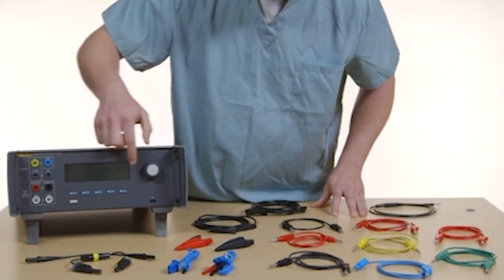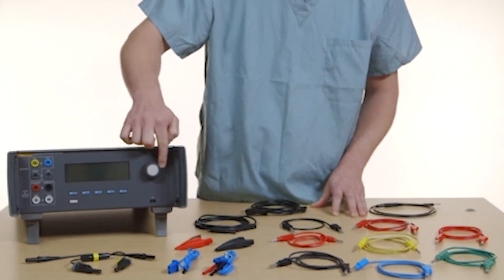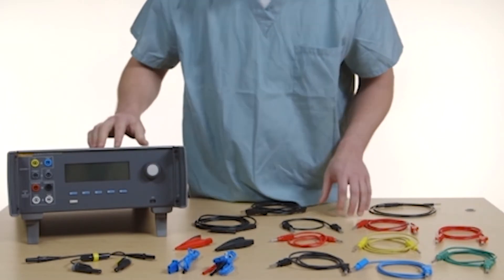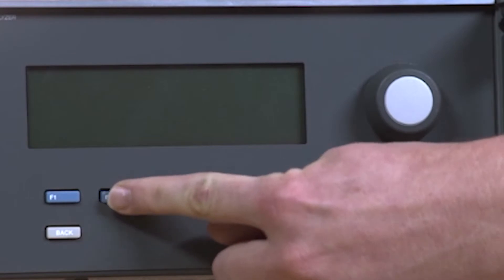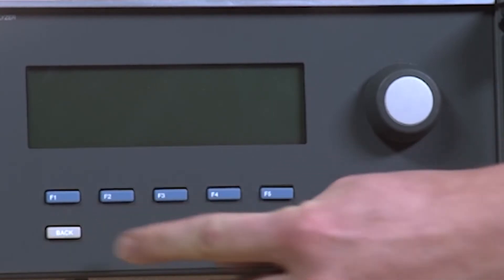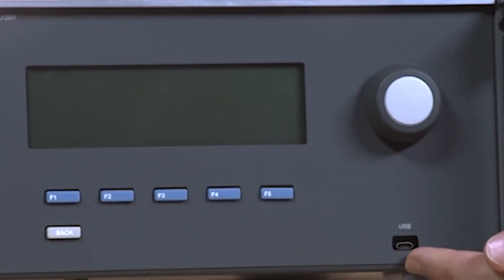The selection knob turns easily to scroll through on-screen instructions and options. The function keys allow you to select testing options. The back button goes to the top or first menu. A USB port, which can be connected to a PC, is also on the front panel.